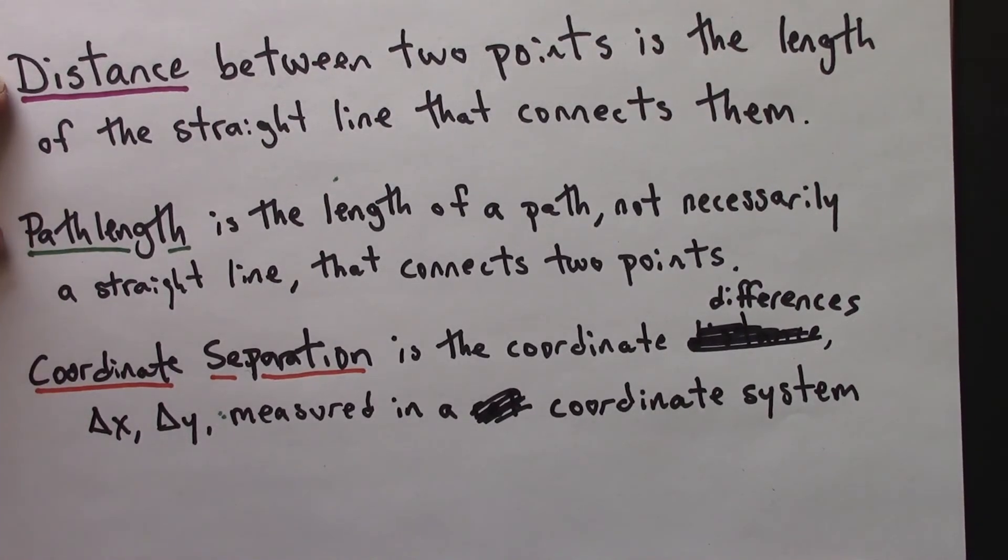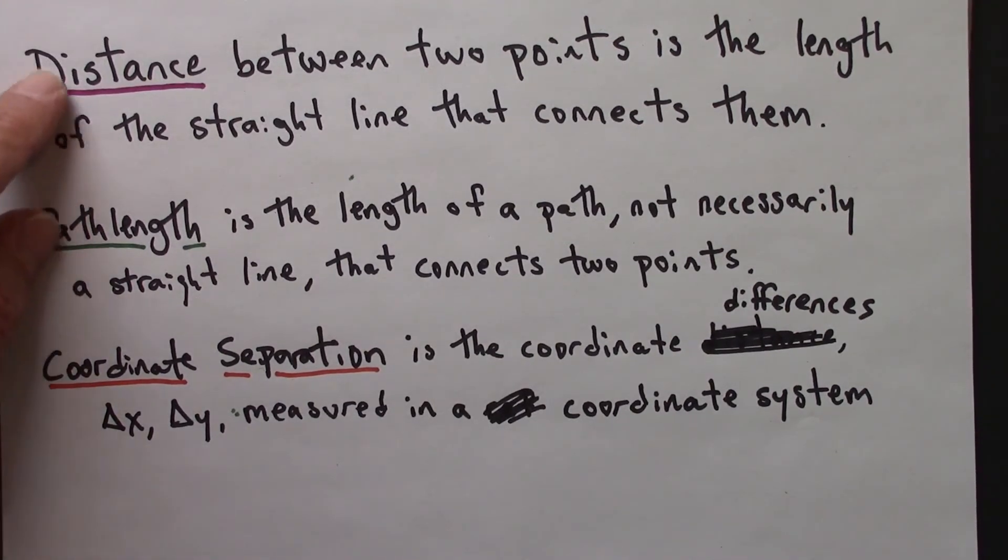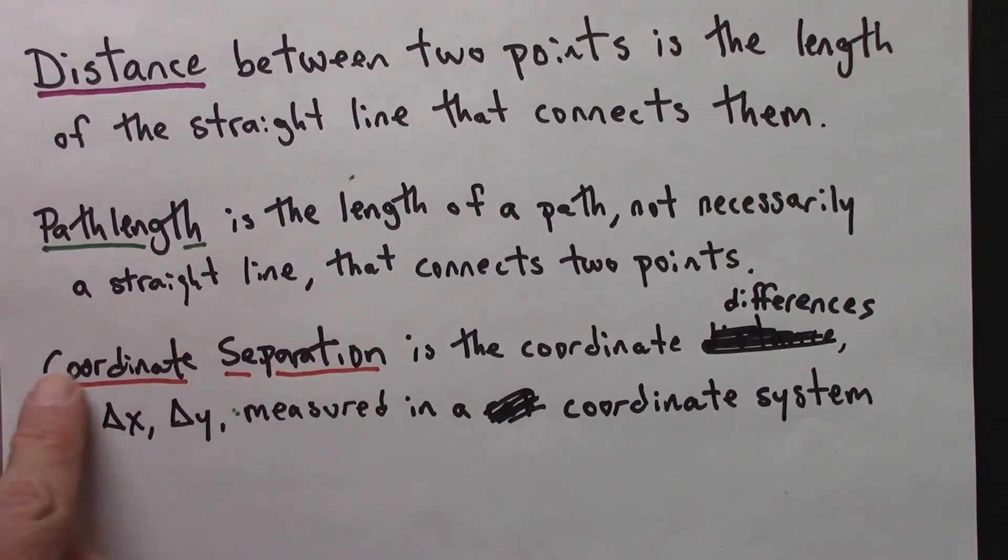These two do not depend on your choice of coordinate axes. They're arrived at via the distance formula, delta x squared plus delta y squared square root. The coordinate separation, as we've seen, does depend on the coordinate system that you choose.